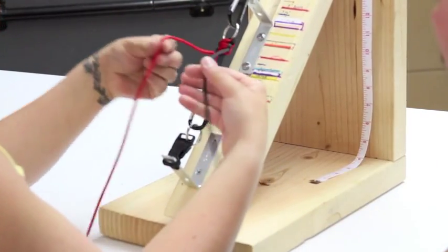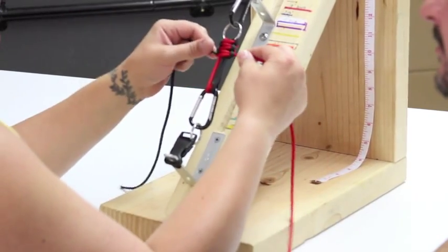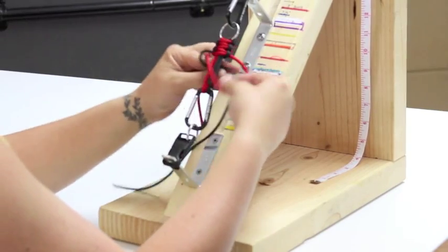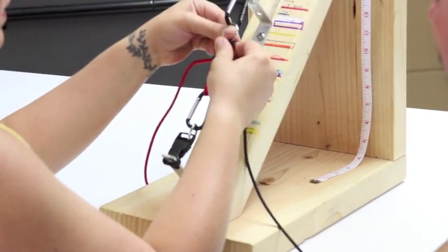Now how much paracord is in here, what length of paracord? Well, this is in total five feet, so I've got about two and a half of each color in the keychain here.